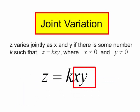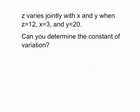Let's try a couple of problems. z varies jointly with x and y. When z is equal to 12, x equals 3, and y equals 20. Can you determine the constant of variation?